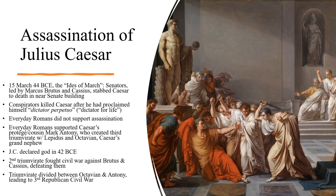On the 15th of March — the Ides of March — 44 BCE, senators led by Marcus Brutus and Cassius stabbed Caesar to death in the Senate. The senators claimed they killed Caesar because he had become too ambitious and had announced he would be dictator for life — he would only leave power in death. Everyday Romans were angered at the assassination; they liked Julius Caesar, thinking of him as a man of the people even though he held absolute power. Everyday Romans supported Caesar's protégé and cousin Mark Antony. Mark Antony created the Second Triumvirate with Lepidus and Octavian — Caesar's grandnephew who would become Caesar Augustus. Julius Caesar was declared a god in 42 BCE, leading to the later tradition of Roman emperors being declared gods.